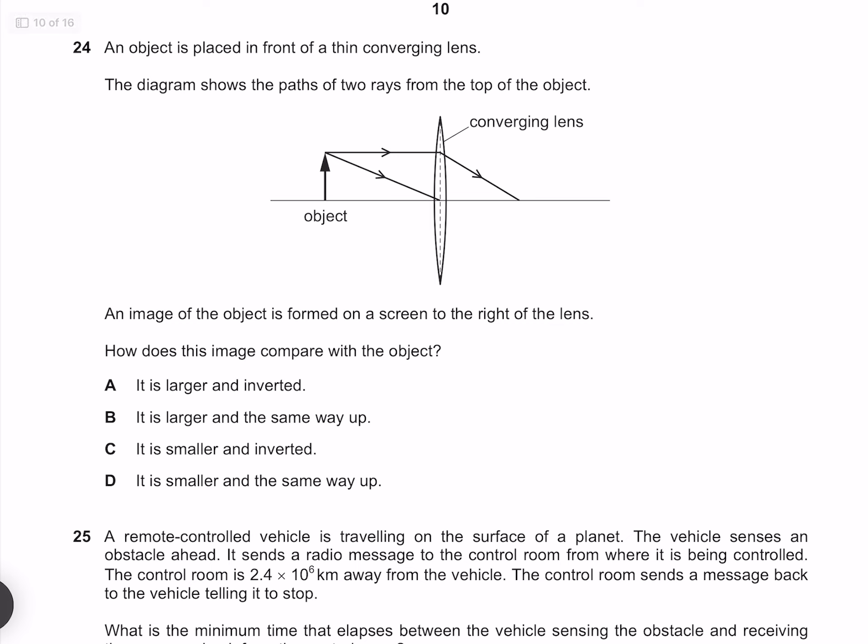An object is placed in front of a thin converging lens. The diagram shows the path of two rays from the top of the object. An image of the object is formed on a screen to the right of the lens. How does this image compare with the object? Both of our rays are going to continue as they are, giving us an image that is larger and is inverted. So our answer must be A.